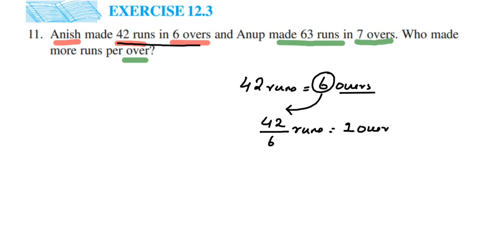Same way to find out Anoop's score, like how many runs he made in 1 over, we have to divide 63 by 7. It is same thing. If you equate 63 runs to 7 overs, you get the same thing, send the 7 to the other side. So I hope it is clear. When you equate this, you will understand.